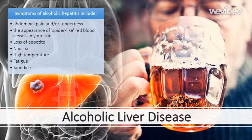Symptoms of alcoholic hepatitis include abdominal pain and/or tenderness, the appearance of spider-like red blood vessels in your skin, loss of appetite, nausea, high temperature — usually around 38 degrees Celsius (101 degrees Fahrenheit) — and fatigue.